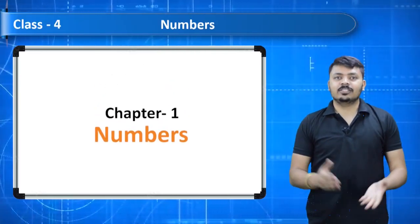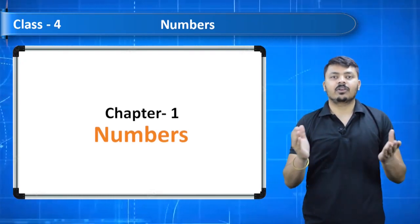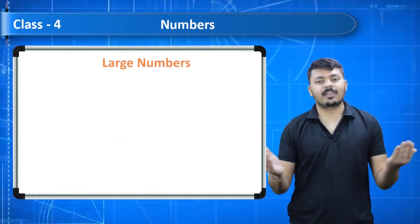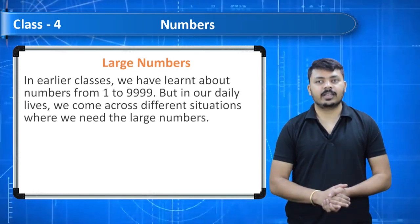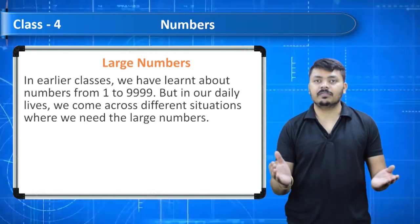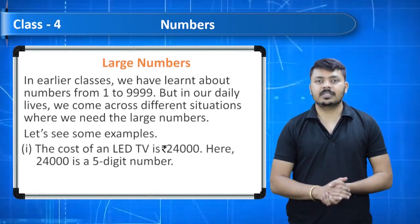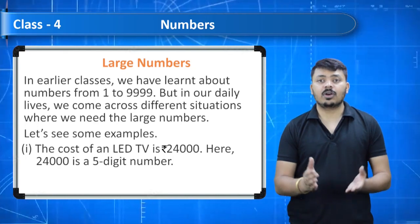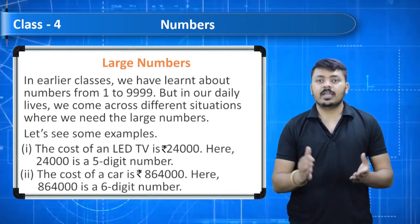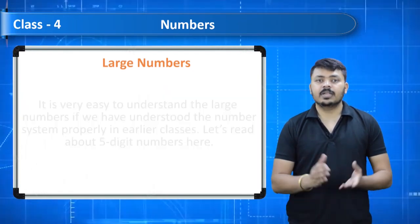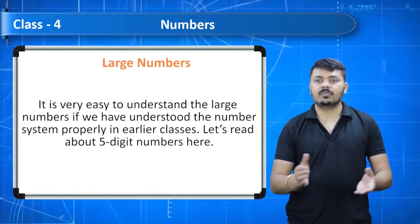Hello everyone, today we are going to start a new chapter — Chapter Number 1: Numbers. Let's look at some important topics we are going to learn. We start with large numbers. In earlier classes we learned about numbers from 1 to 9,999. In our daily lives we come across situations where we need large numbers. For example, the cost of an LED TV is 24,000 rupees — a five-digit number — and a car costs 8,64,000 rupees, a six-digit number.